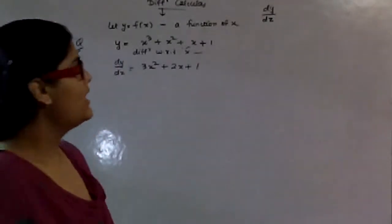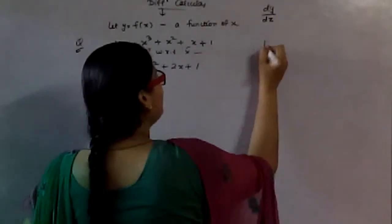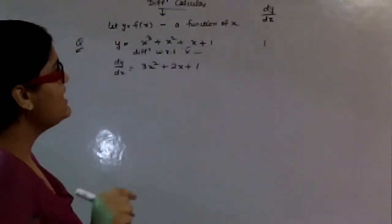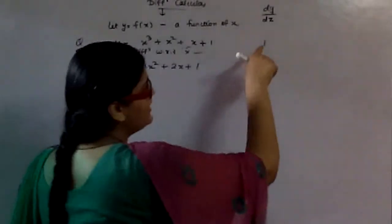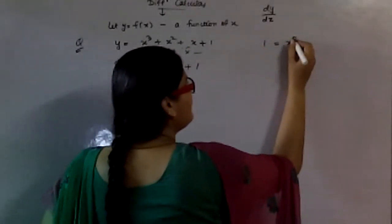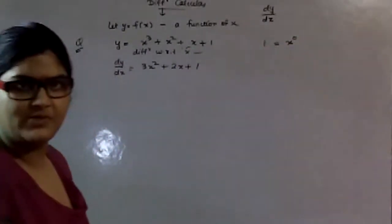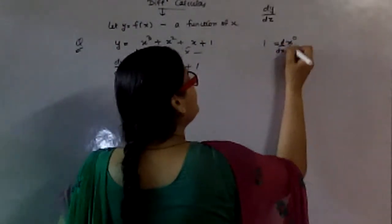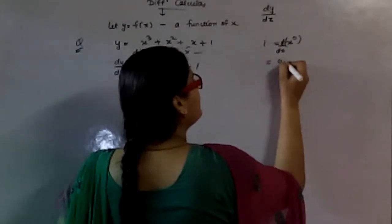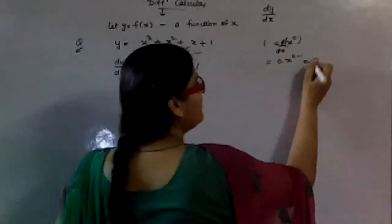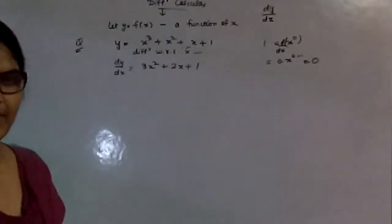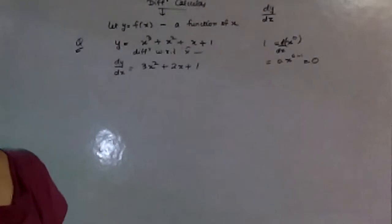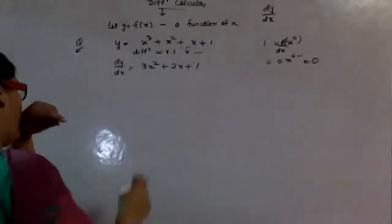Why does a constant differentiate to 0? Because, let us suppose we have to differentiate the constant 1 with respect to x. We can write 1 as x raised to the power 0. Applying the power rule, 0 comes in front and we get 0. So for any constant, the value of differentiation is 0.